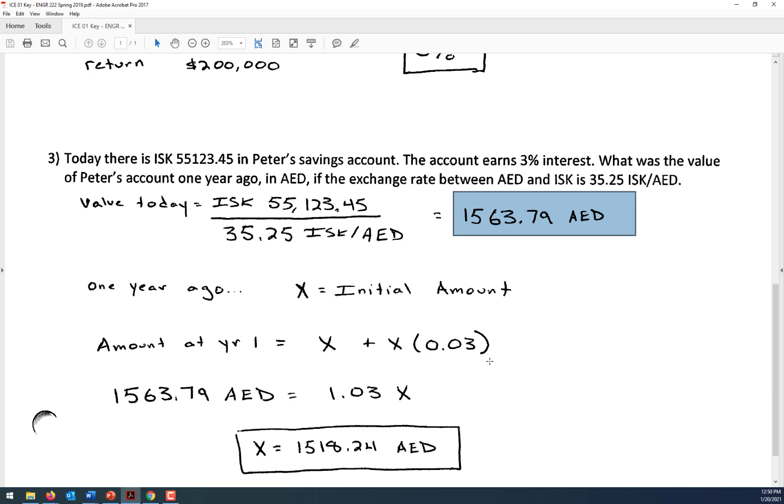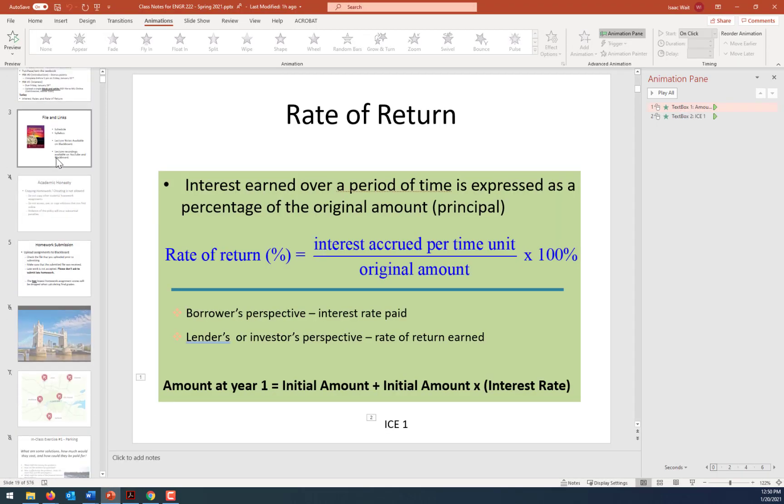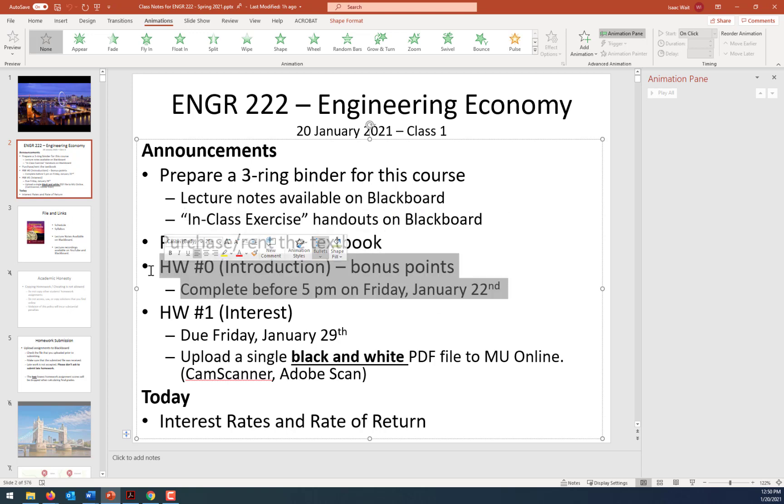We're out of time. We're going to pick back up, just kind of revisiting this example when we get together in class on Friday. Let me remind you of what you should be doing. Remember, get that three-ring binder, print out the notes, print out the in-class exercise, order the textbook, and start on homework zero. Good first day, everybody. Thank you for your participation. This is going to be a great semester. I'm excited. I will see you on Friday afternoon. Feel free to send me an email or give me a call on Teams if you have any questions. Bye-bye.